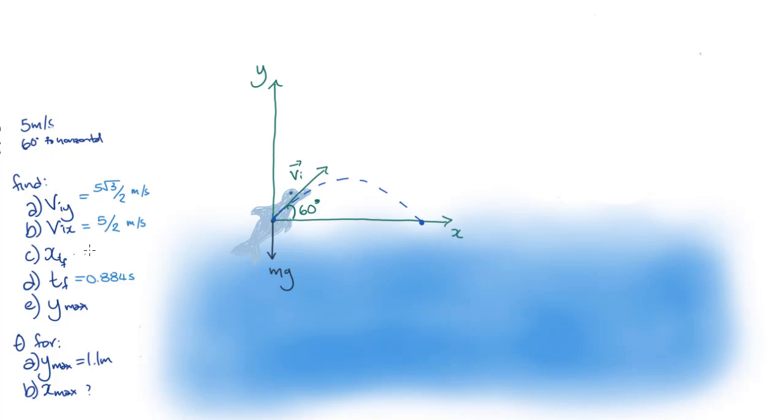Up next, we're going to find how far the dolphin jumped, or xf. This only depends on the horizontal velocity and the time the dolphin spent in the air. Since the horizontal velocity is constant, we just need to multiply the horizontal velocity, vix, by the time spent in the air, tf. If we plug in our previous values, this comes out to 2.21m.